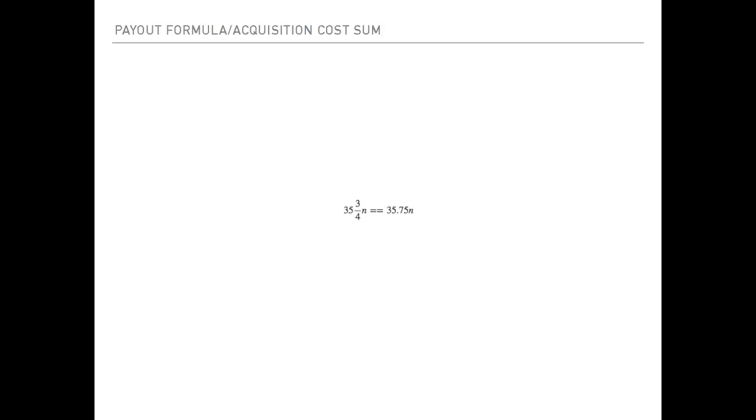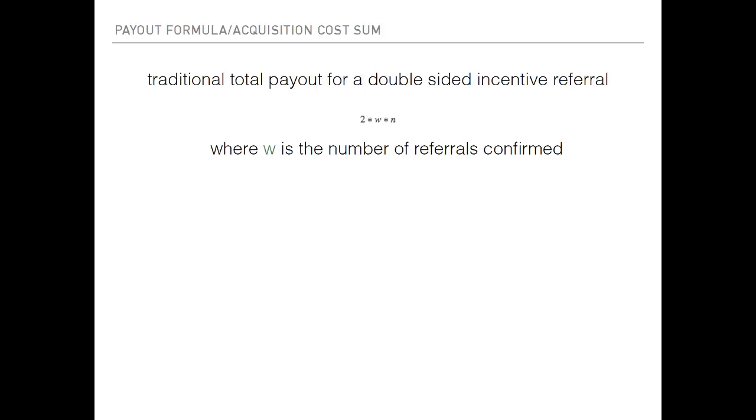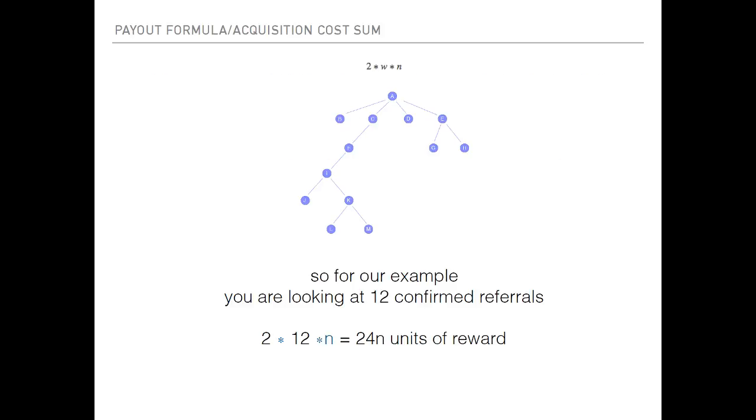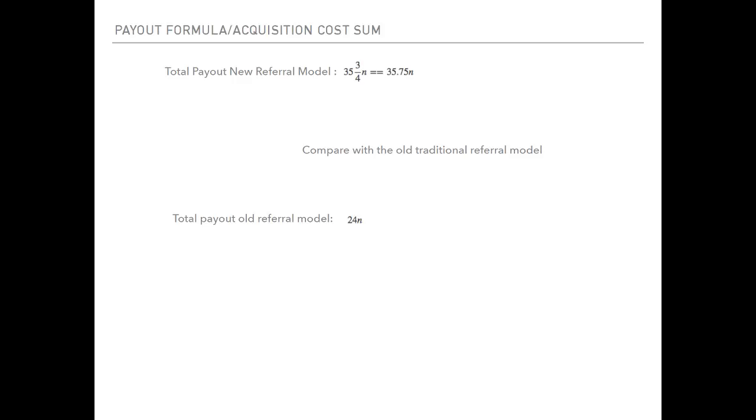35.75N is the total number of referrals you paid out after—remember you multiply the single-side reward by two since you want to do dual-sided because of the benefits I explained earlier in this talk. We can see the total payout for the new referral model is this. Let's compare with the old traditional referral model where it's just double-sided referrals. The traditional model is this simple formula: you go 2 times W times N, where N is your reward and W is the number of referrals confirmed.